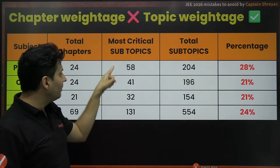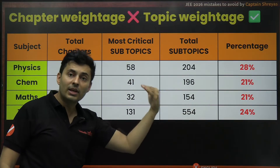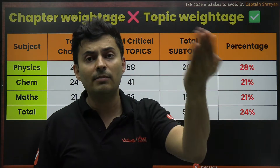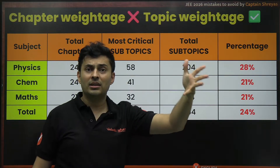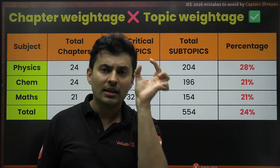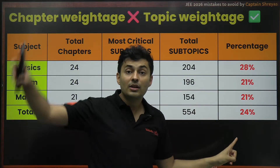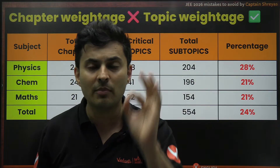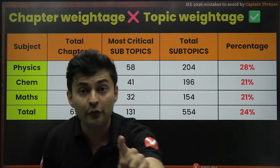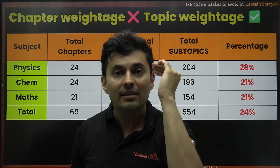These are the total subtopics, out of which only 58 are getting repeated. Out of 196 total subtopics in chemistry, only 41 are getting repeated. Out of 154 subtopics in mathematics, only 32 are getting repeated. For example, mirror questions hardly come; inclined plane projectile hardly comes. But in maths, the two-point finding always comes. Certain subtopics are repeated in almost every shift. That comes to just 24% of the entire syllabus, and if you do 24%, you are getting 60% marks — close to 180 out of 300, which will guarantee you 99 percentile.